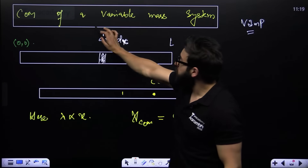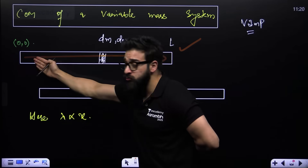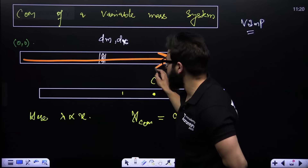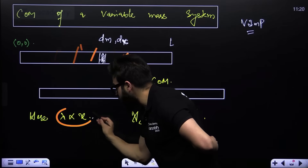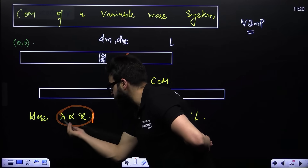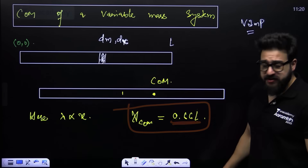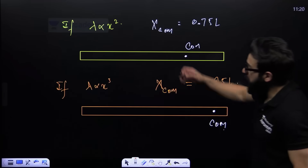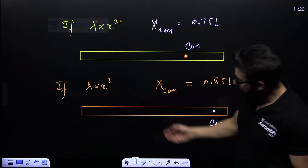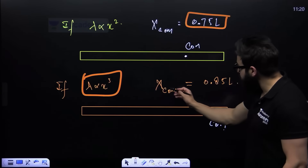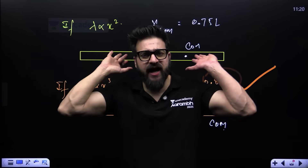Now if there is a variable mass system — a rod whose mass per unit length changes as you move along it. If lambda is proportional to x, center of mass is at 0.66L. If lambda is proportional to x², center of mass is at 0.75L. If lambda is proportional to x³, center of mass is at 0.8L. Remember these directly.